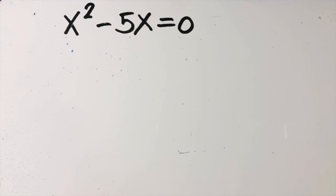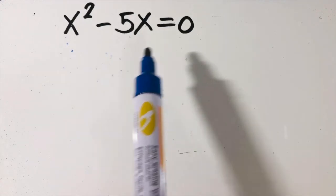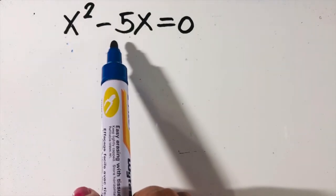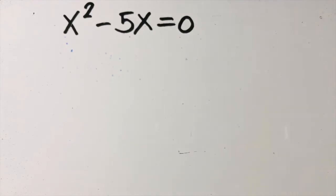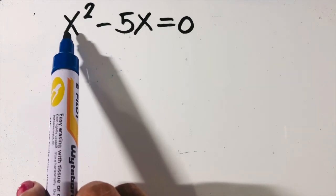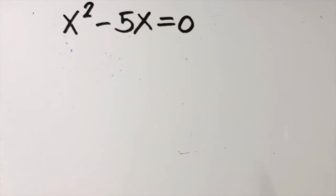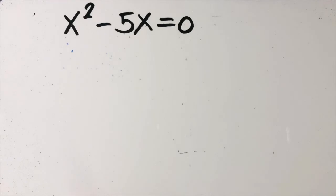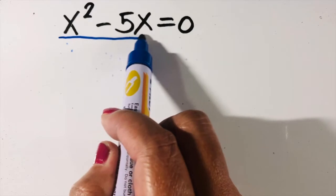First, we check if the given equation is written in standard form — yes, this is x squared minus 5x equals zero. Number two, is there a common factor among all terms? We have x squared and 5x — the common factor between them is x.